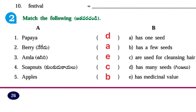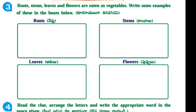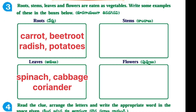Match the following. First one: Papaya, berry, amla, soap nuts, and apples. From the B side: has one seed, has a few seeds, are used for cleansing hair, has many seeds, has medicinal value. Answers: D, A, E, C, B. Papaya — D, has many seeds.